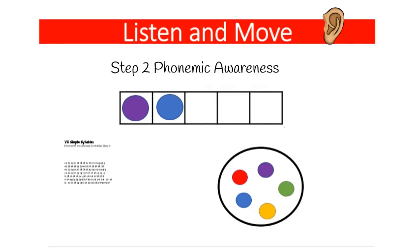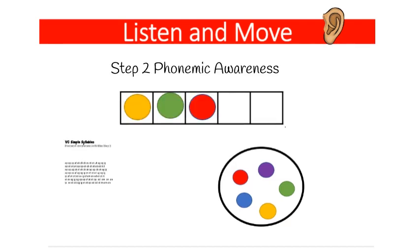Some students struggle with this. To help them, take their hand and have them touch each sound. In this case I've said 'Sam,' so there are three markers, one for each sound. Have the student touch them as you say 'Sam,' then have them say the word or syllable 'Sam.'